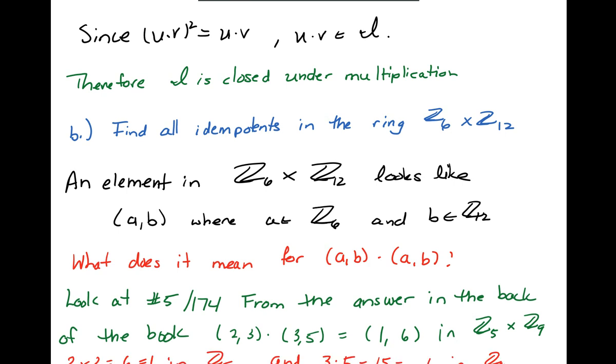We're using backward extrapolation. I looked at that and said, well, 2 times 3 is 6 which is 1, and 3 times 5 is 15 which is 6 in Z9. So it's exactly what I thought it was, that the product is component-wise product.